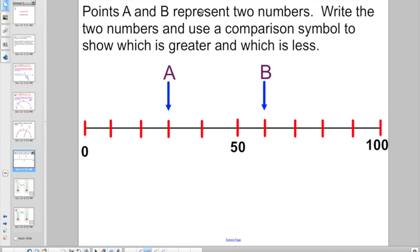Let's keep going on. Points A and B represent two numbers. Write the two numbers and use a comparison symbol. Remember, greater than, less than, or equal to, to show which is greater and which is less. So here's zero and here's 50. That's an easy subtraction problem to find that difference. 50 minus zero is going to be 50. Divide by the number of unit segments between two numbers. I have three, four, five. I have to find out what each one of my tick marks are worth. So I'm going to take 50, the difference between the two numbers, divide it by the number of unit segments. Five times what gives me 50? That one's not too tough. That should be 10.